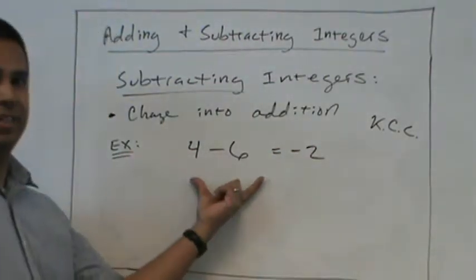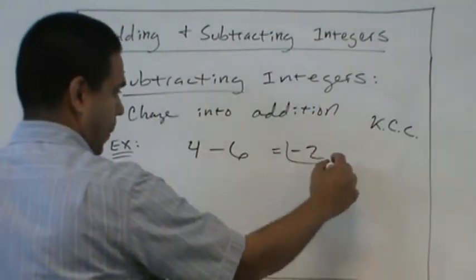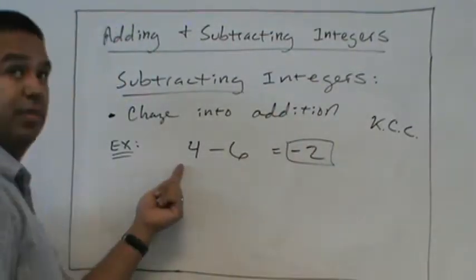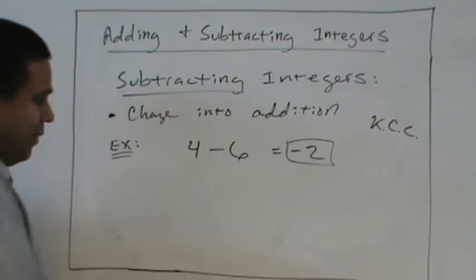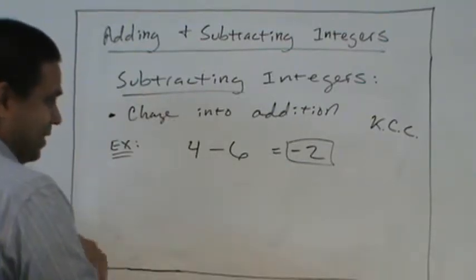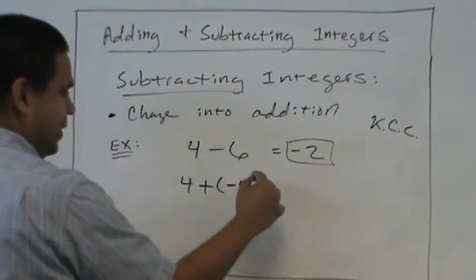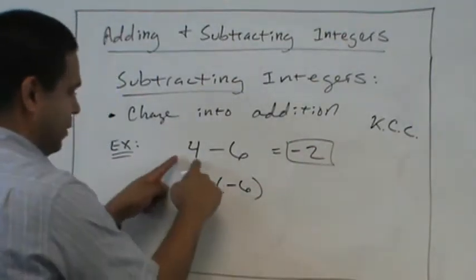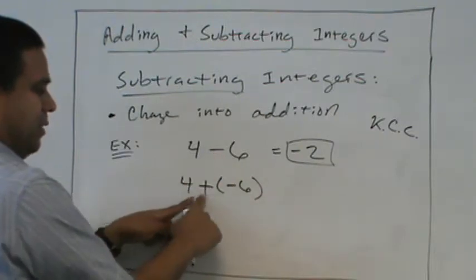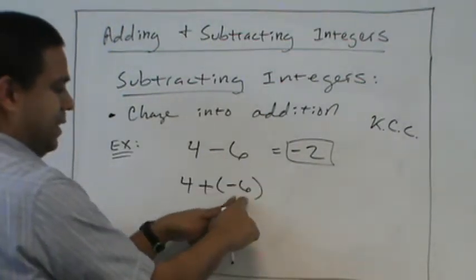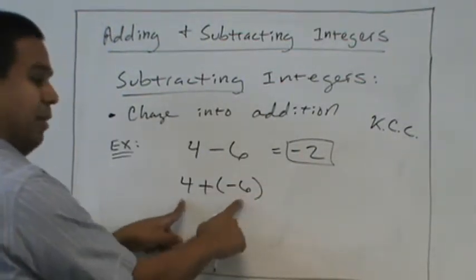I'll show you a couple different methods on this one. If we have 4 take away 6, we change that to addition, 4 plus a negative 6. Keep change change. Keep the 4. Change minus to addition. Change positive 6 to negative 6. And now we know the rule.